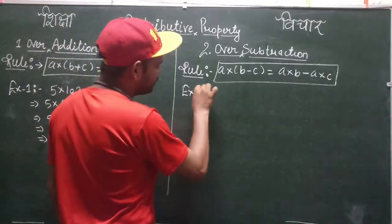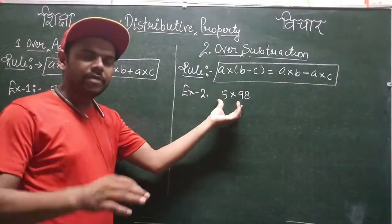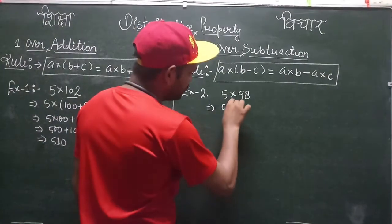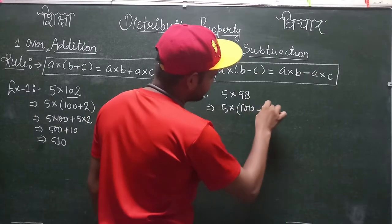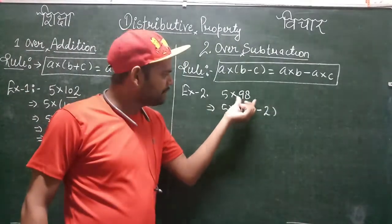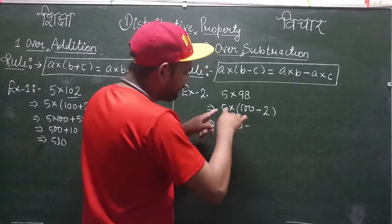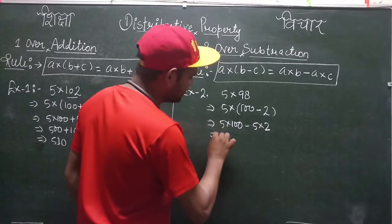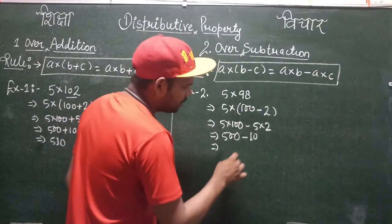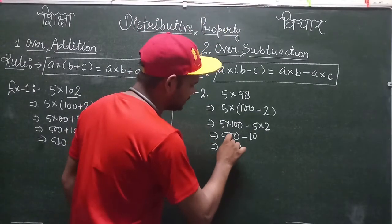Example two illustrates the case of distributive property over subtraction. Suppose we want to multiply 5 by 98. In the case of distributive property over subtraction, we write 98 as 100 − 2, because 100 minus 2 gives 98. Now, 5 will be multiplied by 100 and then 5 will be multiplied by 2. So we get 5×100 − 5×2, which is 500 − 10. After subtraction, we get 490, and that is the answer to this multiplication.